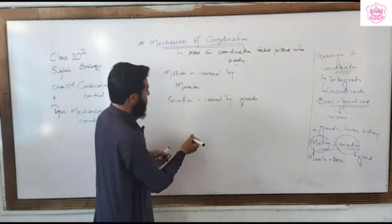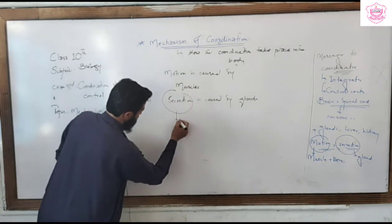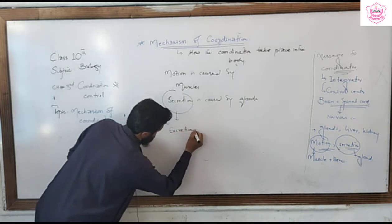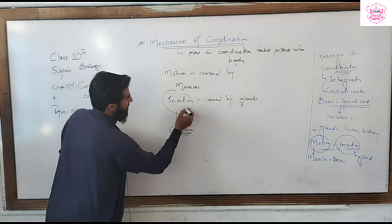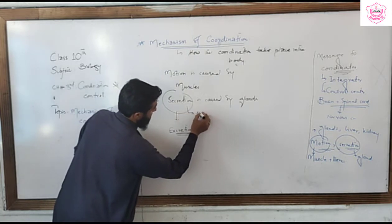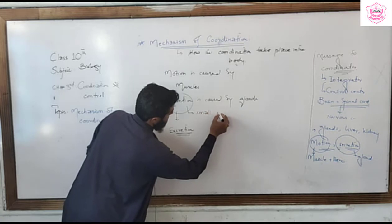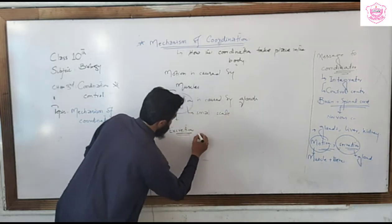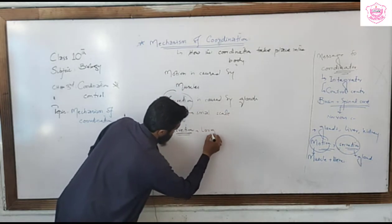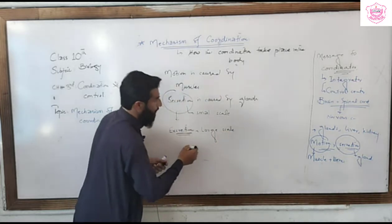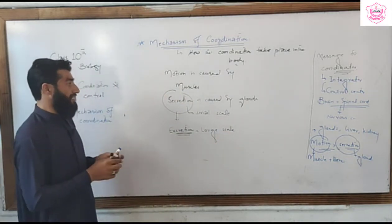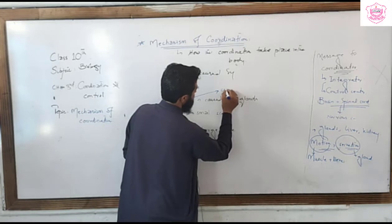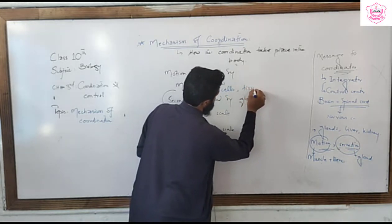The basic difference between secretion and excretion: secretion is produced by cells or glands for a specific purpose within the body, and it can occur at small scales. Excretion is carried out at larger scales and involves the removal of waste material. The secretion and excretion occur in specific body parts, cells, or tissues.